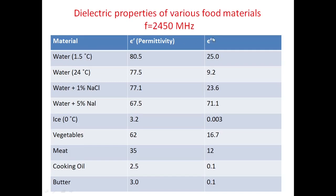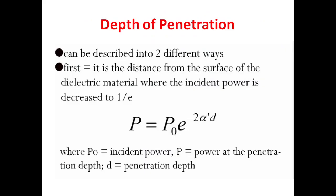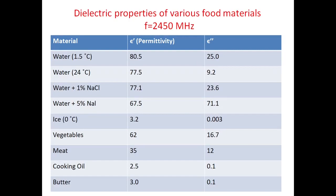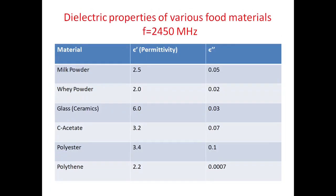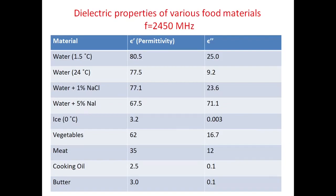From the dielectric properties table, we can see which materials absorb microwaves more and which allow them to pass. Where ε'' is high, such as for a 25% NaI (sodium iodide) solution, the value is much higher, meaning energy loss is faster — the material heats faster because it has more molecules generating heat by friction.